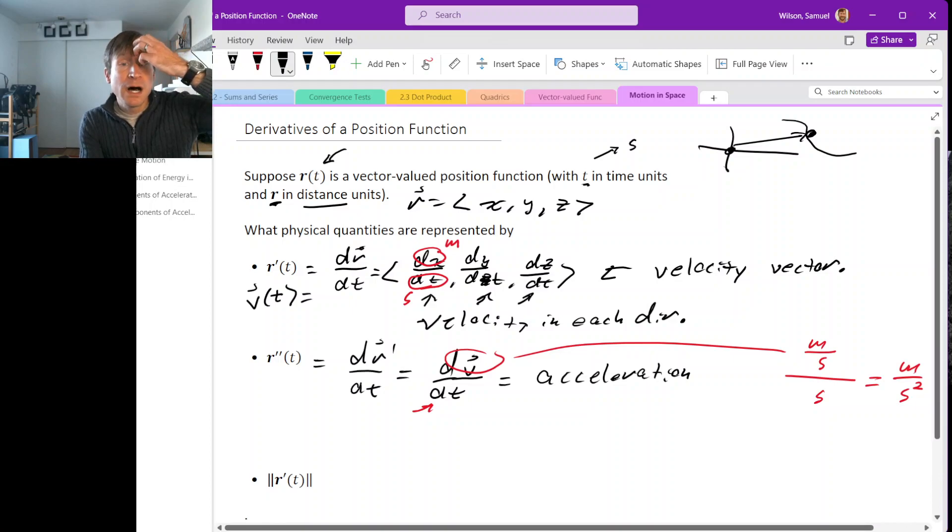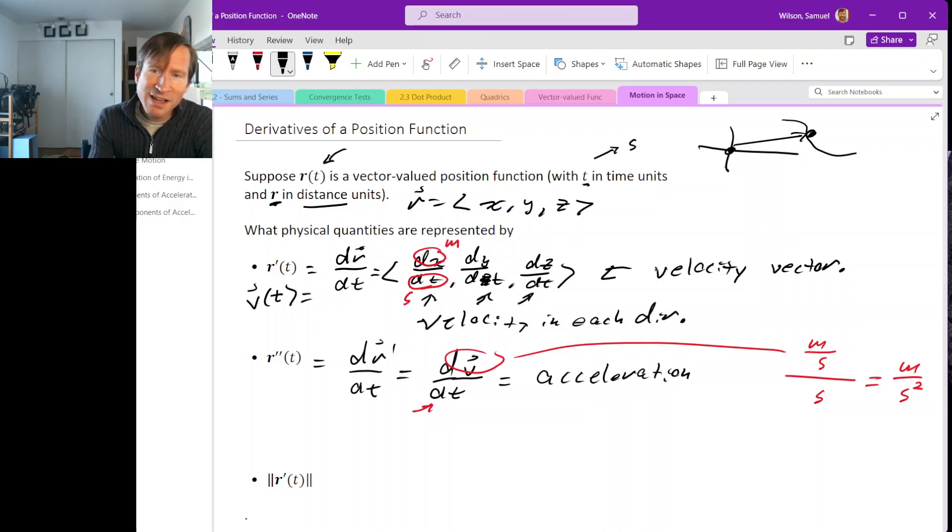So what about the magnitude of r-prime? Well, remember, the velocity tells you both a magnitude and a direction. It tells you how fast you're going and in what direction you are moving. And the magnitude tells you only the how fast part of that. So magnitude of r-prime, this is the magnitude of the velocity vector. And this is just how fast you're going. This is throwing away the direction information and only keeping the magnitude information. But how fast you're going, we have a name for that. That's speed.